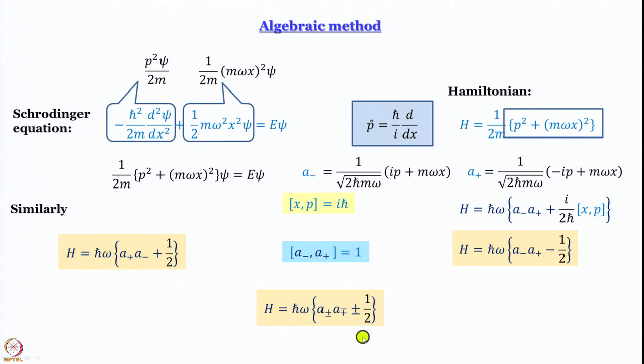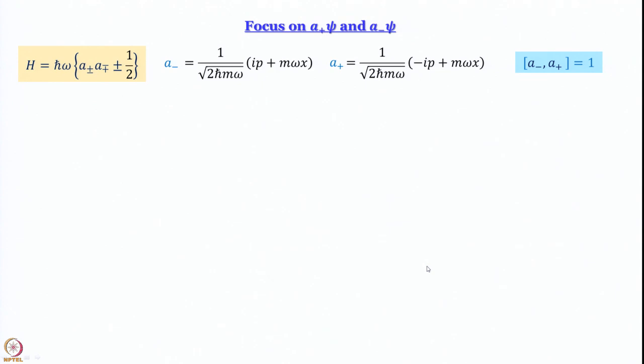We have interesting relationships: expressions of the Hamiltonian in terms of ladder operators, and the commutation relation [a⁻, a⁺] = 1. What we have not yet shown is why these are called ladder operators of all things. We can write the Hamiltonian in general form: H = ℏω·(a±·a∓ ± 1/2), giving H = ℏω·(a⁺a⁻ + 1/2) or H = ℏω·(a⁻a⁺ − 1/2).